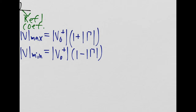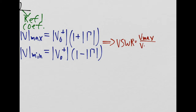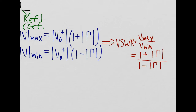We can now define the quantity VSWR, which stands for the voltage standing wave ratio. Engineers commonly refer to this term as VSWR. It is defined as Vmax divided by Vmin, which equals 1 plus the magnitude of gamma divided by 1 minus the magnitude of gamma.